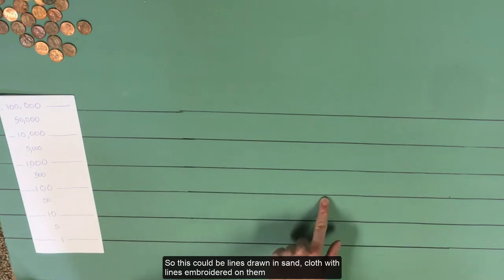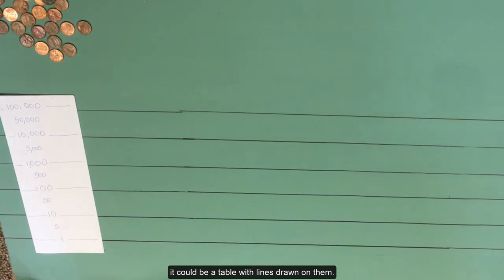So this could be lines drawn in sand, cloth with lines embroidered on them, or a table with lines drawn on them. In my case, I have a board that I have drawn lines on.